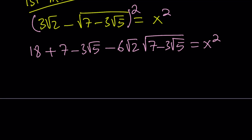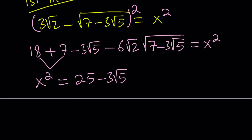Let's go ahead and simplify this a little bit. We can definitely add these up. With x squared on the left-hand side, that's 25 minus 3 root 5. Now we can go ahead and multiply these radicals under the same radicand: 6 times the square root of 14 minus 6 root 5.